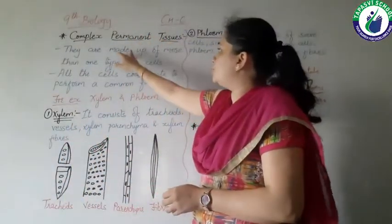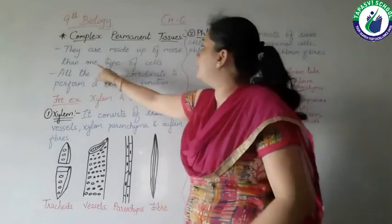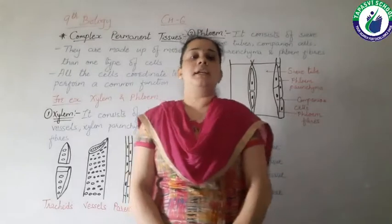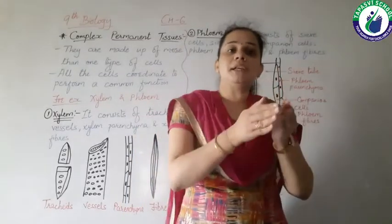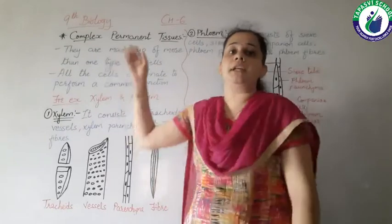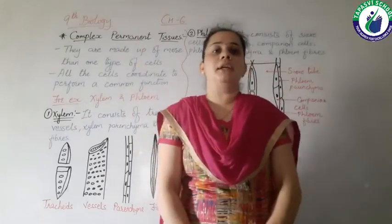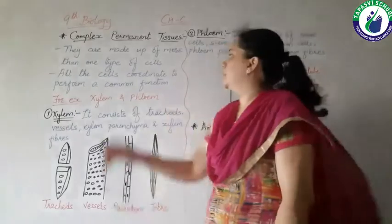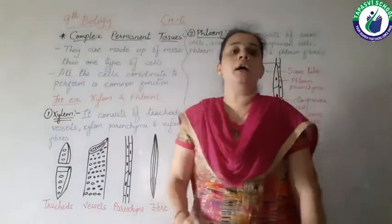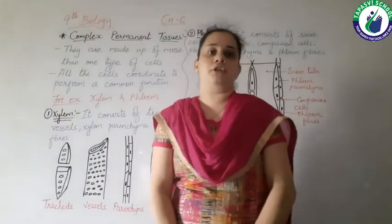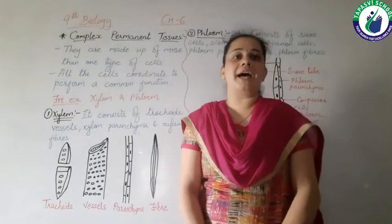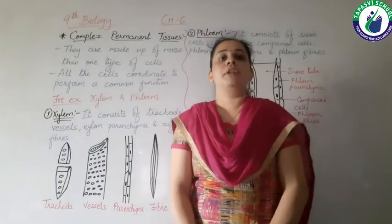Complex permanent tissues are made up of more than one type of cells — not similar or same type of cells. The types of cells are different in complex permanent tissues, but these cells coordinate to perform a common or particular function. This type of tissue is present in plants.